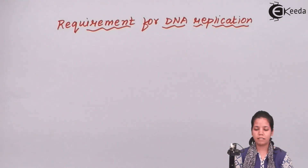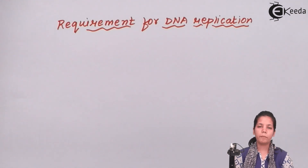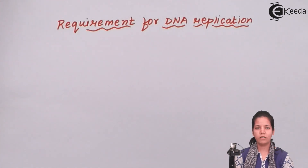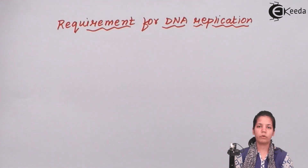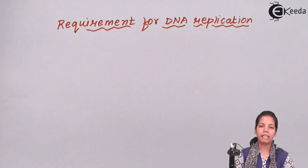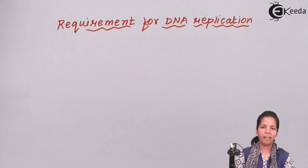The next enzyme is DNA polymerase 3. DNA polymerase 3 basically adds nucleotides in the direction of 5' to 3'. When we say nucleotides, it means A, T, G, and C.